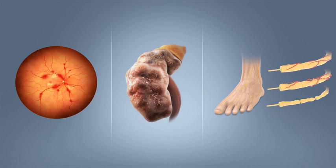Diabetes is due to either the pancreas not producing enough insulin, or the cells of the body not responding properly to the insulin produced. There are three main types of diabetes mellitus. Type 1 DM results from the pancreas's failure to produce enough insulin due to loss of beta cells. This form was previously referred to as insulin-dependent diabetes mellitus, IDDM, or juvenile diabetes.